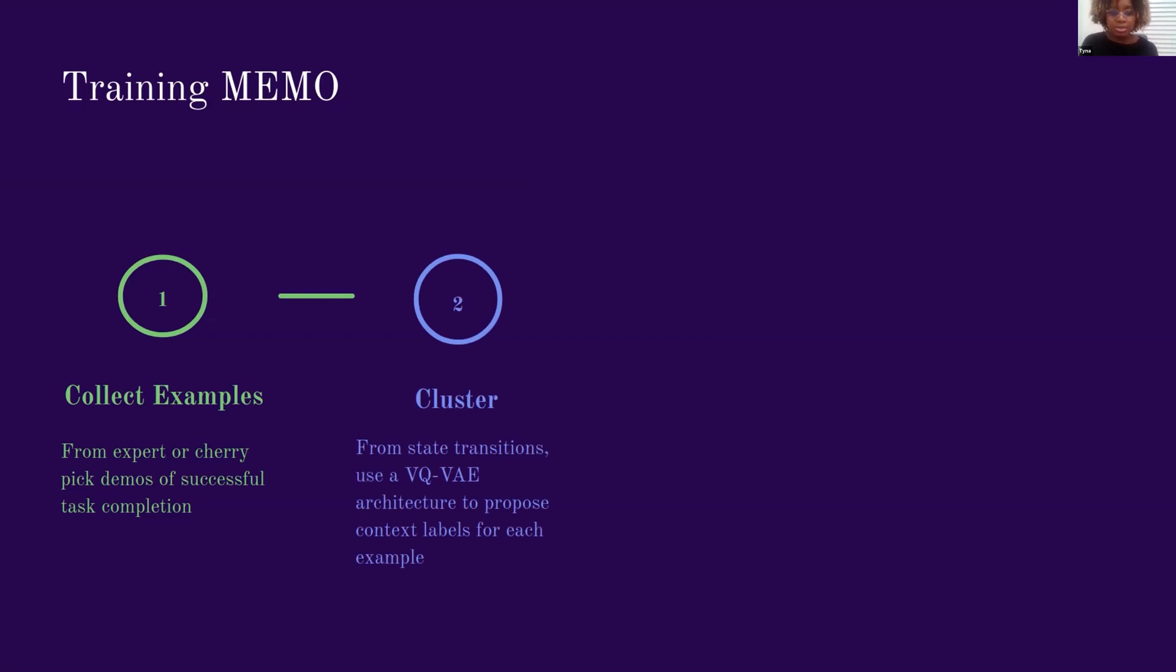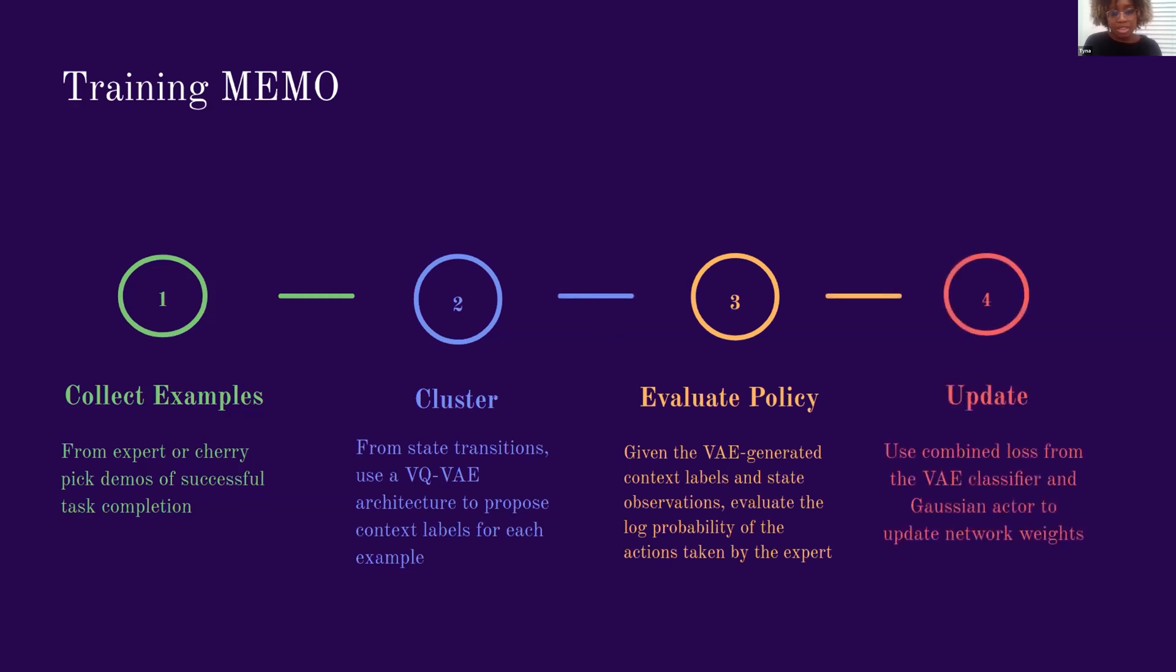Traditionally, the VQVAE produces discrete labels, but in this context, we pass distances instead, which I'll get to in a moment, to a generator, which in this context is a Gaussian MLP actor that will recover a probability distribution conditional on the current state and proposed cluster information. So let's take a closer look at the architecture.